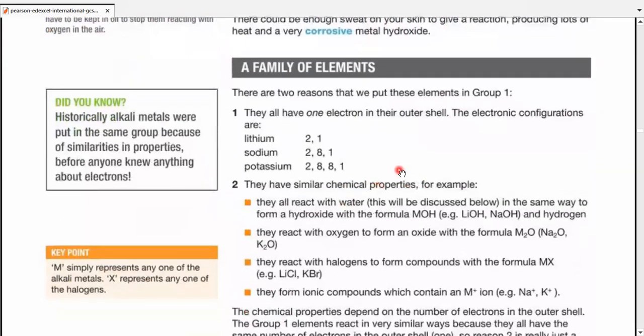Two reasons to put these elements in Group 1. They have one electron in their outermost shell. This represents the electron in their outermost shell, and as you see the numbers are 1. Second most important reason, they have similar chemical properties. They all react with water to form a hydroxide with the formula MOH. M is the metal, which means LiOH, NaOH, and so on and so forth, plus they'll produce hydrogen.